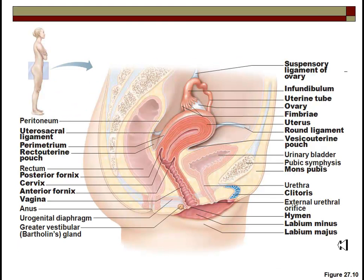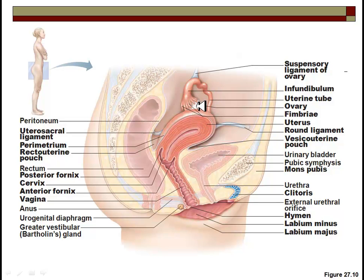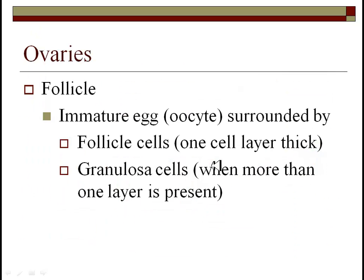We'll be discussing these major parts such as the clitoris, the vagina, the cervix, the uterus, the fallopian or uterine tube, as well as the ovary and what's actually occurring inside the ovaries.